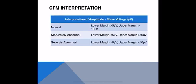Thinking about amplitude, we look at the lower and upper margins to determine what is normal. A normal trace has a lower margin of greater than 5 and an upper margin of greater than 10. A moderately abnormal trace has a lower margin of less than 5 but an upper margin of greater than 10 — the lower margin drops but the upper remains normal. A severely abnormal trace has both a lower margin of less than 5 and an upper margin of less than 10 — everything has shifted downwards.